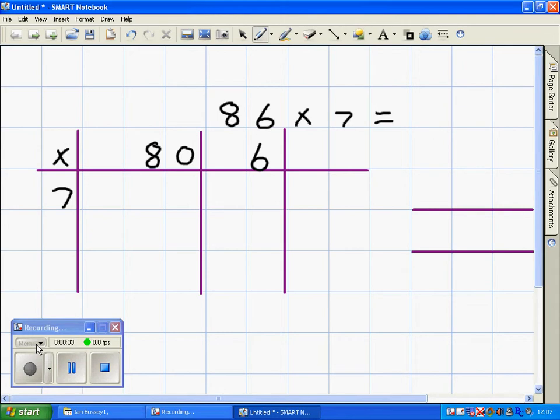First, we need to times 7 times 80, but to make it easier, 7 times 8. Who knows what 7 times 8 is? Ken, 56, which will be 560 because of the placeholder on the 80.